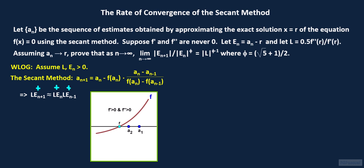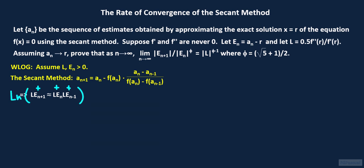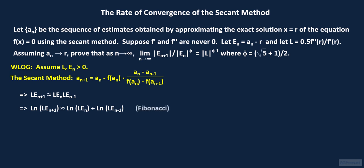The three other cases are: one, f prime and f double prime are both negative; two, f prime is greater than zero while f double prime is less than zero; and three, f prime is less than zero while f double prime is greater than zero. We have posted the link to that video in the comment section for reference, and the viewer can fill in the details of the proof for the last three cases as an exercise. We take the natural logarithm of both sides, and get that the natural logarithm of l times e sub n plus 1 is approximately equal to the natural logarithm of l times e sub n plus the natural logarithm of l times e sub n minus 1. And so the sequence of the natural logarithm of l times e sub n behaves like a Fibonacci sequence for large values of n.